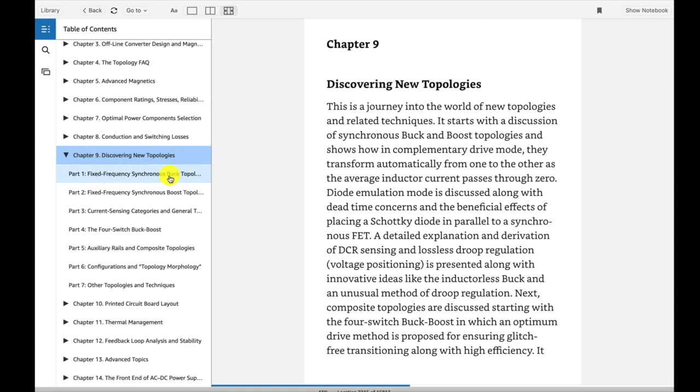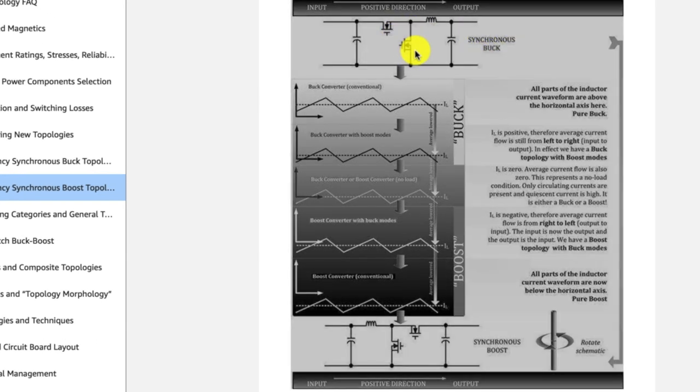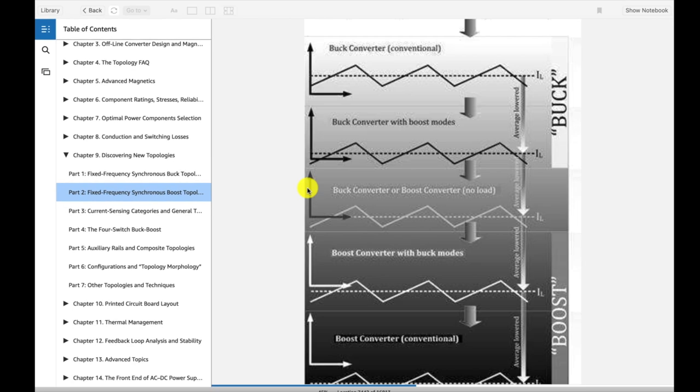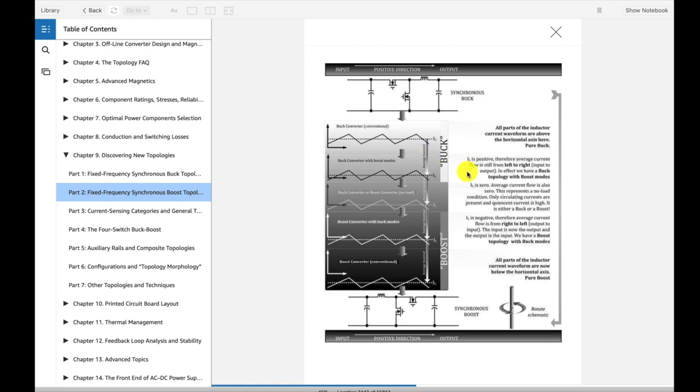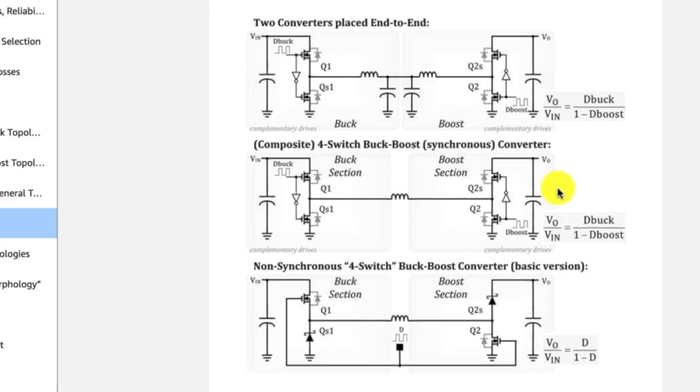Chapter 9, discovering new topologies. This is an interesting take he has. He's illustrating here: up on top we see a synchronous buck, so the switching FET on top and the synchronous FET down here. Then he shows these waveforms. They all look very similar, but if you notice this little diagram here, it says rotate the schematic. And look at that! Sure enough, you just spin the schematic around and you have a boost converter. Pretty interesting, right? There's a close-up of what he's depicting there.